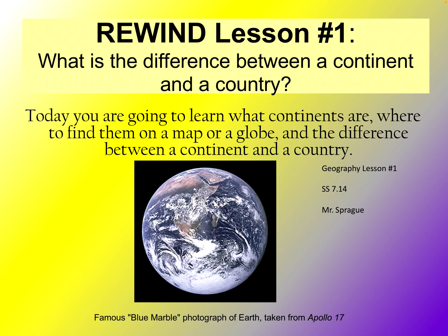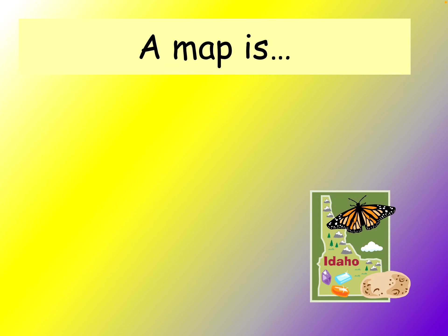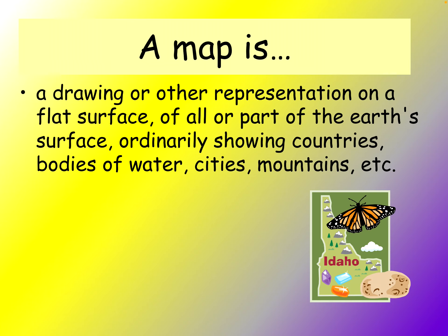So let's start with the very basic concept: continent and country. First, a globe is a three-dimensional scale model of the earth. Look at Africa on a globe — Africa is huge, a large landmass, very distinctive. A map is a flat representation of the earth. Which is more accurate, a globe or a map? It's the globe. Maps are never 100% correct — there's something wrong with every map you ever see, and that's because the earth is not flat. It's round, it's a sphere.